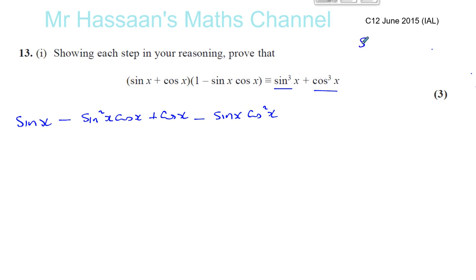I know that sin squared x plus cos squared x equals 1. So if I replace the sin squared x, I know that sin squared x is the same as 1 minus cos squared x. So let's do that. Let's replace that.